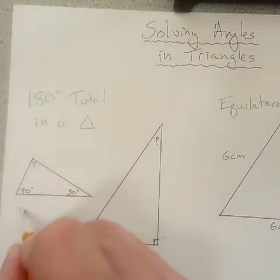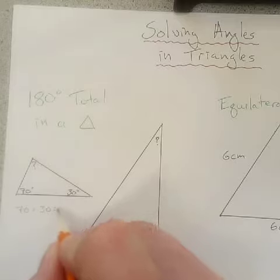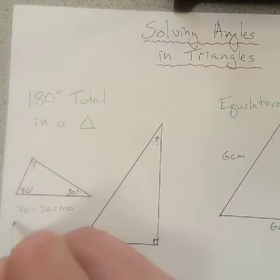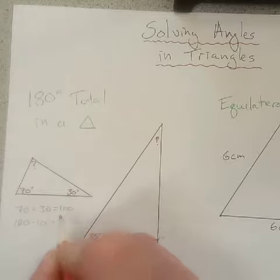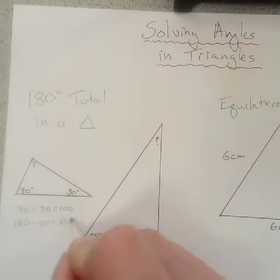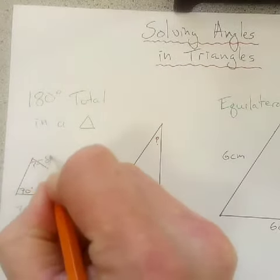Let's add these first. 70 plus 30 equals 100. And if we subtract that from 180, we are left with 80 degrees. So this is our missing angle, 80 degrees.